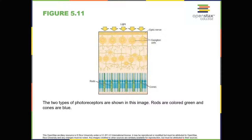Imagine going to see a blockbuster movie on a clear summer day. As you walk from the brightly lit lobby into the dark theater, you notice that you immediately have difficulty seeing much of anything. After a few minutes, you begin to adjust to the darkness and can see the interior of the theater. In the bright environment, your vision was dominated primarily by cone activity. As you move into the dark environment, rod activity dominates, but there's a delay in transitioning between the two phases. If your rods don't transform light into nerve impulses as easily and efficiently as they should, you'll have difficulty seeing in dim light, a condition known as night blindness.